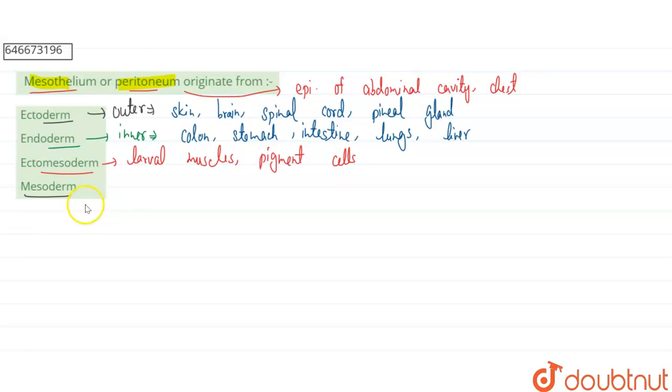The fourth option is mesoderm. Mesoderm is the middle germinal layer, and this middle germinal layer will give rise to the mesothelium.